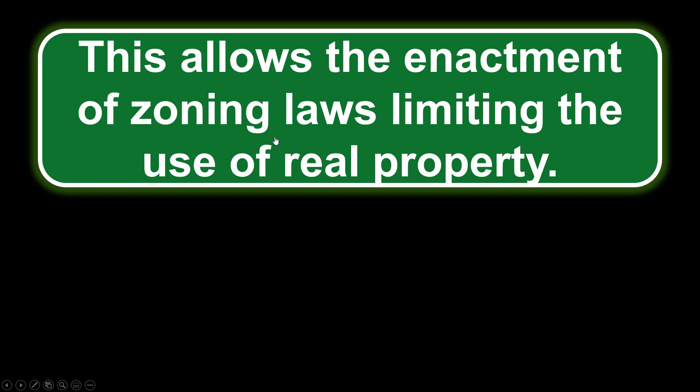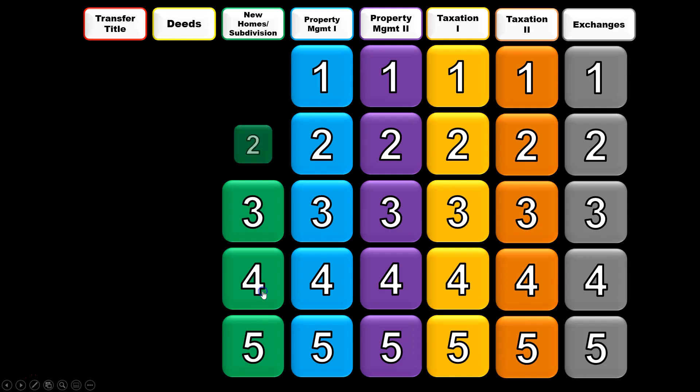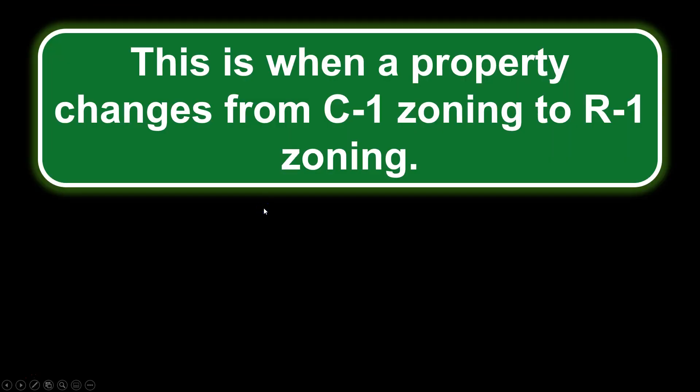This allows the enactment of zoning laws limiting the use of real property. When we think of zoning, it is used to implement the master general and master plans, but the power to actually enact these zoning laws is police power. This is when a property changes from C1 zoning to R1 zoning — basically downgrading from commercial to residential. The technical term for this is down zoning.